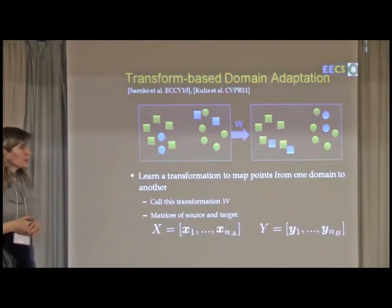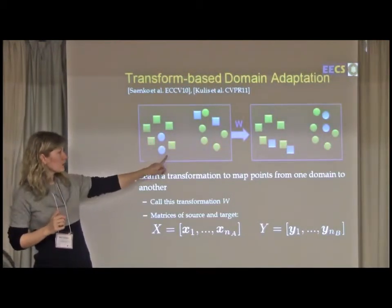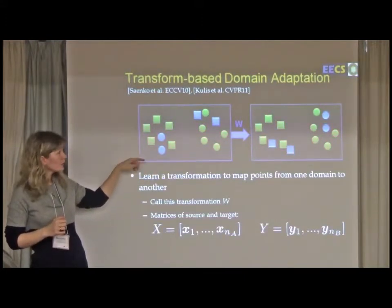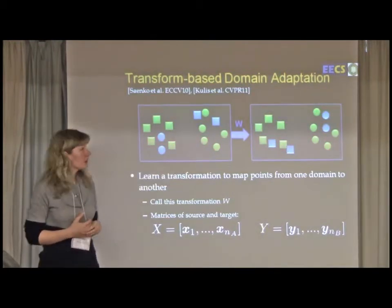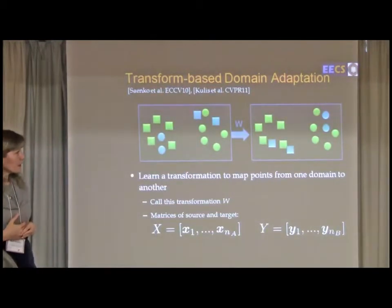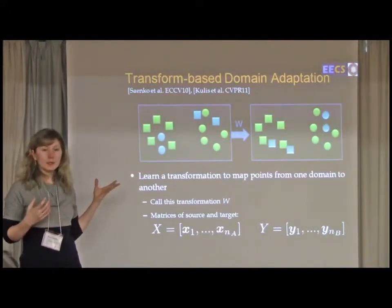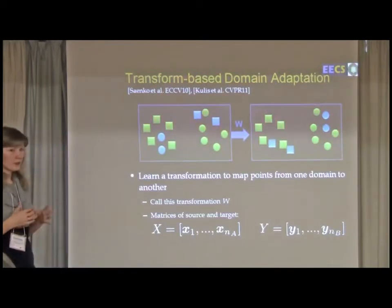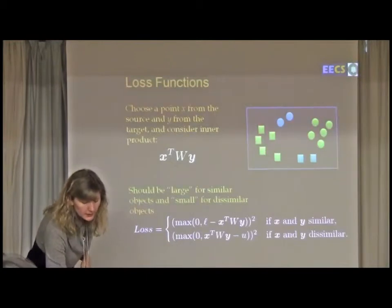The idea here is that we have some source domain and a target domain. The shapes correspond to different categories. And we want to learn transformation, calling it W, that when applied to the feature space, maps points that belong to the same category in different domains closer together and vice versa. So that's the main idea.